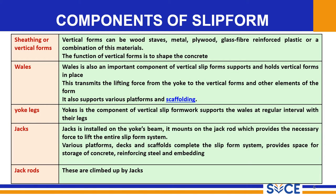The components of slip form construction include sheeting for the vertical formwork. The vertical formwork can be wood staves, metals, plywood, glass fiber reinforced plastics, or a combination of these materials. The function of this vertical formwork is to shape the concrete. The next component is the blades, which hold the vertical forms in place. The blades also act as a platform, providing support for the various platforms and scaffolding.